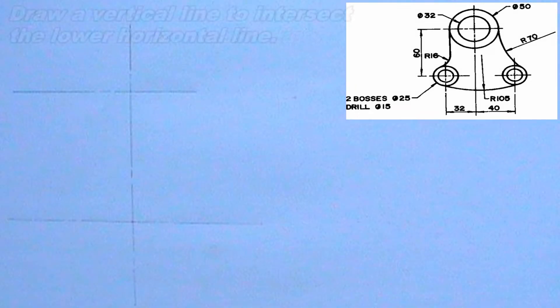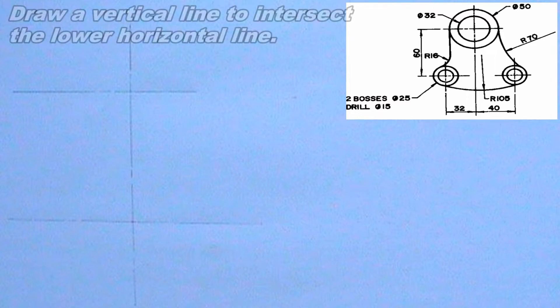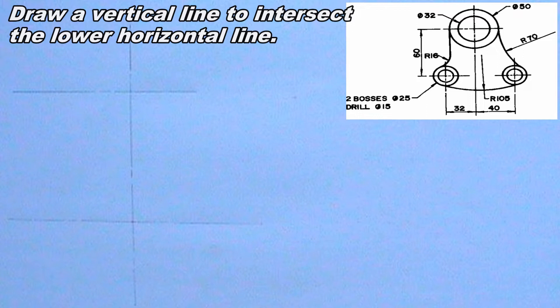I will draw a vertical line to intersect the lower horizontal line. The vertical line should be 40mm from the first vertical line. I will also draw another vertical line at the left side of the lower horizontal line. The vertical line should be 32mm from the first vertical line.